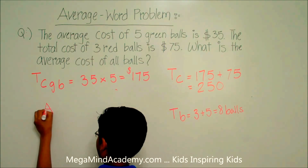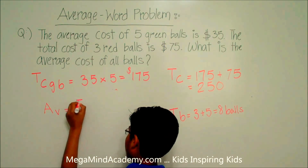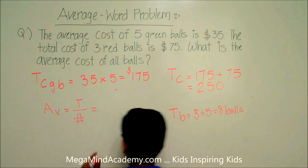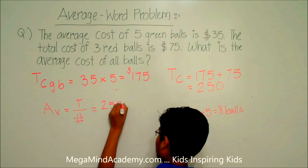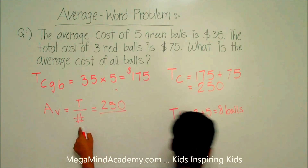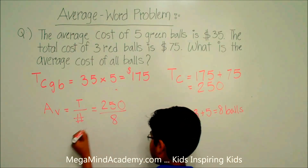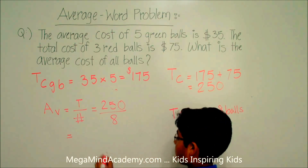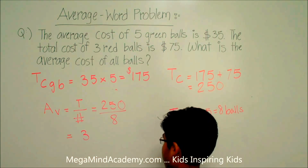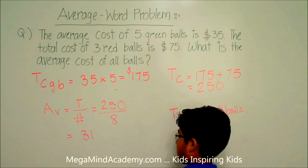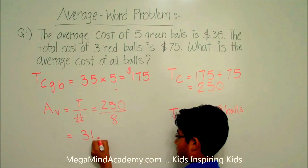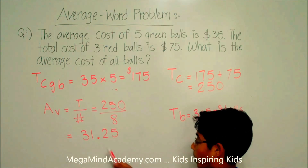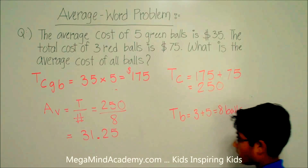AB is equal to the total over the number of balls, which is equal to $250 over eight balls. 250 divided by eight: 25 divided by eight is three with a remainder of one. Bring down the zero to get ten; ten divided by eight is one with a remainder of two. Two-eighths equals 0.25. So the average cost of each ball is $31.25.